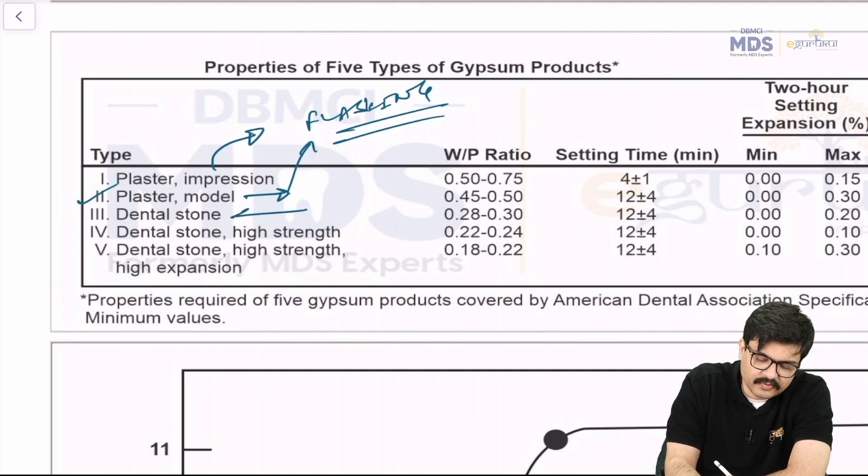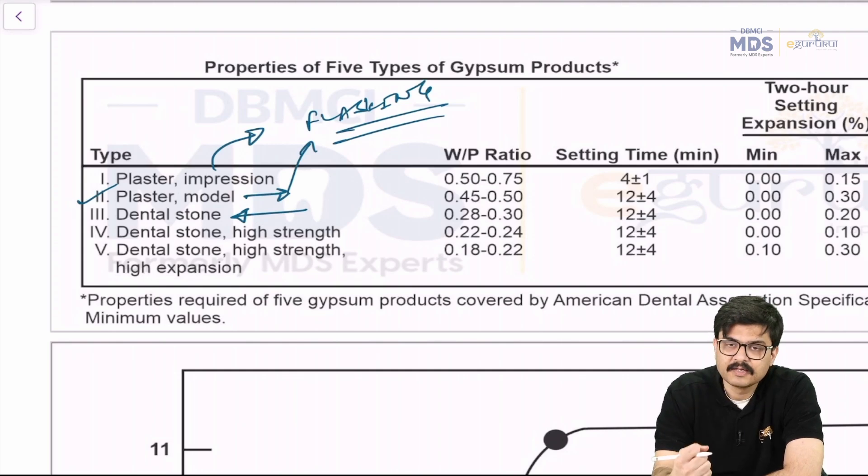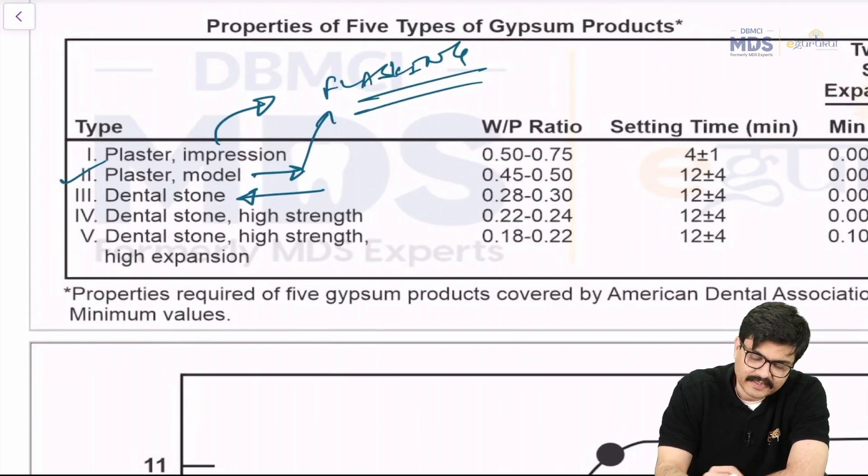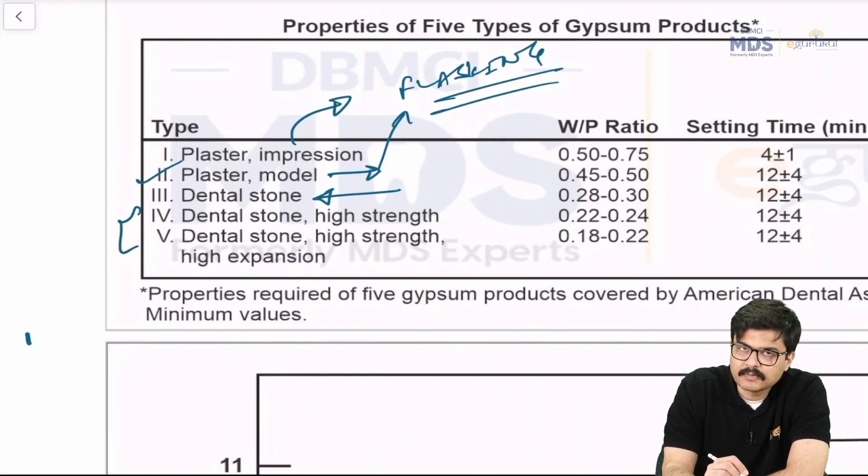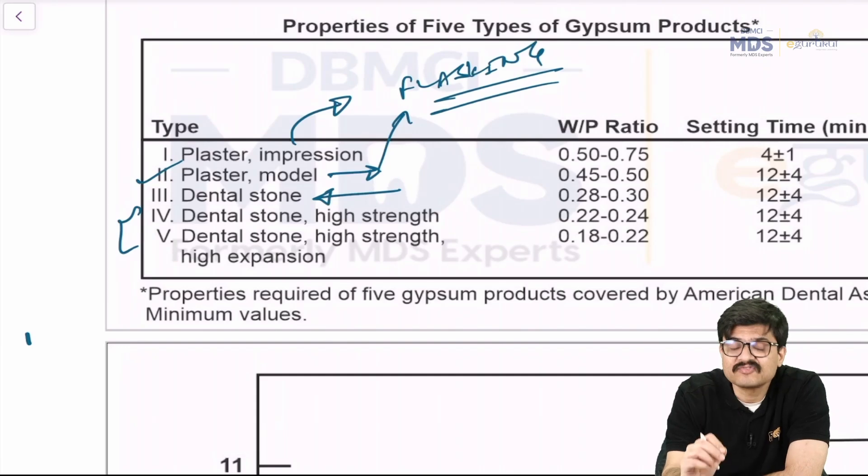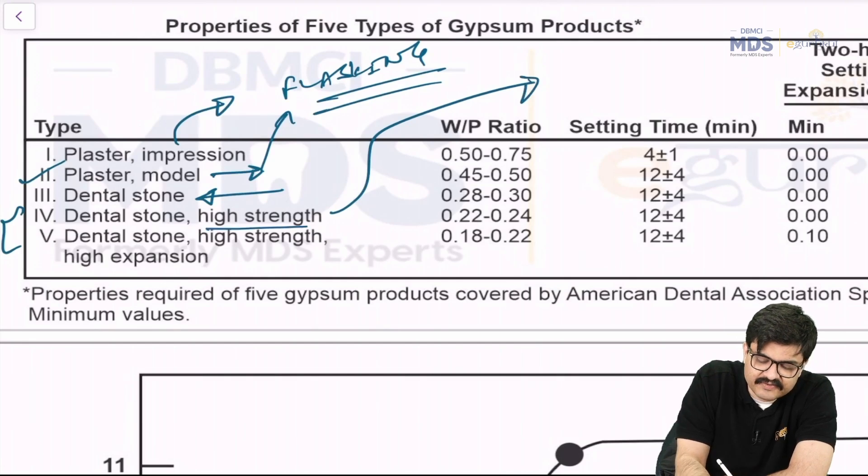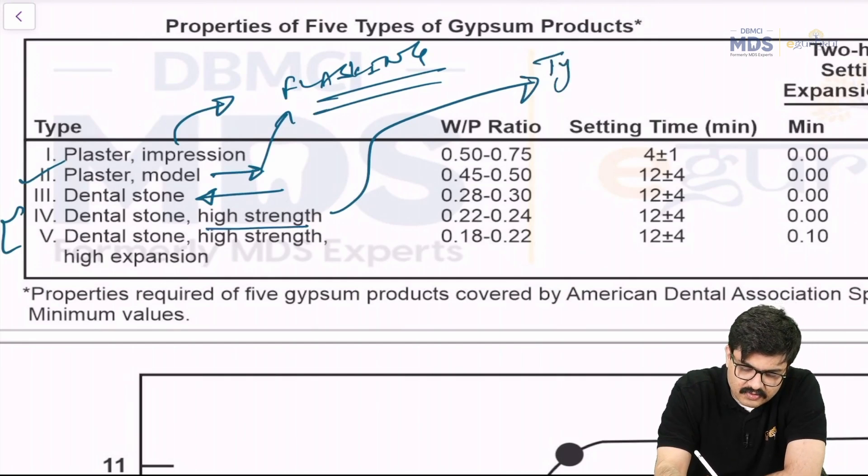Type 3 dental stone is, of course, pouring your final impression. Once you do your border molding and you've taken your final impression with zinc oxide eugenol, you pour your final impression with this, with the type 3, because it's harder. It has got more abrasion resistance. And therefore, it is used as a final cast. Type 4 dental stone is actually, type 4 and type 5 are both die stones. But specifically, if you ask me that, if the examiner in your viva asks you, tell me one answer for die stone, then it would be type 4. That's a classical die stone. A die stone's requirement is, as it has been written, it should have high strength. So type 4 is the die stone.